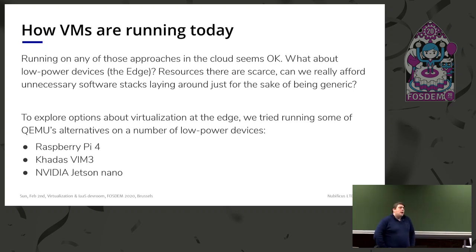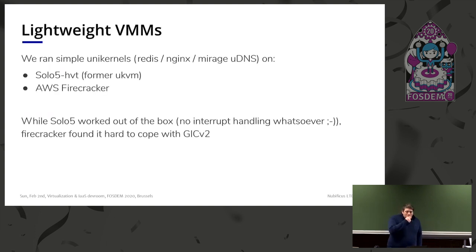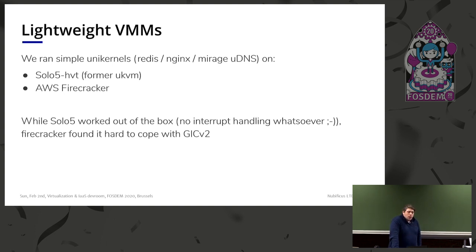We've been trying to understand the overheads when running workloads on low-power devices. To do that, we explored several lightweight hypervisors and executed them on a number of low-power ARM-based and x86 devices. We used the RampRun unikernel, MirageOS unikernel, and ran Redis, Nginx, and a DNS example on Solo5, on Solo5's KVM tender (Solo5 HVT), on Firecracker, and on QEMU. Solo5 worked out of the box on a Raspberry Pi as the first thing we tried, but Firecracker didn't work because there was no GICv2 interrupt controller support.